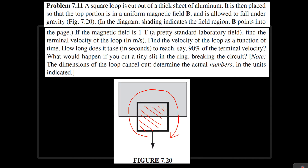Once it starts going down, there's going to be a current along this edge. Applying the right-hand rule again — the current goes this way and the magnetic field points inside — that's going to result in a force pointing upwards. This is the magnetic force. We also have the gravitational force pulling this thing down, so with both of these forces counteracting each other, let's try to find the velocity of this hoop.